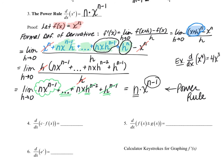Moving on to our last three rules. The derivative of a constant times a function follows the constant multiple rule, just like we did with limits: the derivative of a constant times a function equals the constant brought out in front multiplied by the derivative of the function. Similarly, the sum and difference rules state that when adding or subtracting two functions, we can compute the derivatives separately and then add or subtract the results.